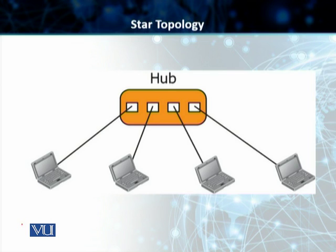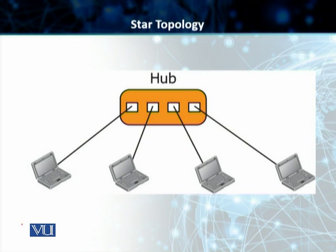Moving on, we have got the second physical topology, which is called the star topology. In a star topology, as you can see, there is a dedicated link from every single machine to a centralized point or centralized server, which is called a hub. Unlike mesh topology where every device was connected to the other one, in star topology that is not the scenario. The hub plays the role of a central exchange, and the devices do not talk to each other directly.